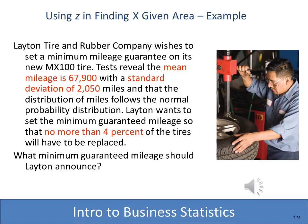Here's an example of how we might use Z in a real-life business situation, where we need to solve for both Z and X. A tire and rubber company reveals that the mean mileage is 67,900 and the standard deviation is 2,050 — very important values for computing Z scores. They want to guarantee that no more than 4% of tires will have to be replaced, meaning 96% should last within the guaranteed mileage. What guaranteed mileage should they announce?